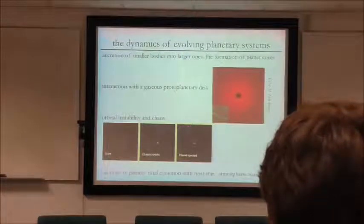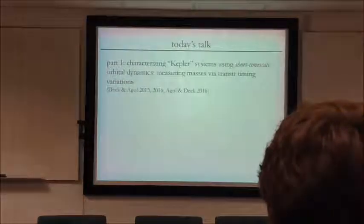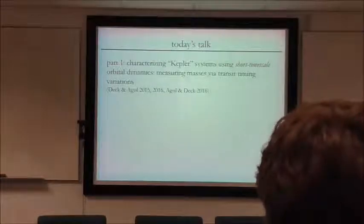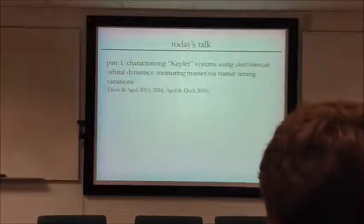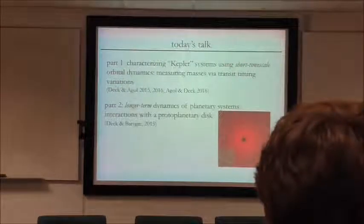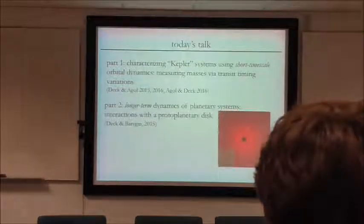Finally, if you're going to talk about close-in planets, you also need to worry about tidal evolution with the host star and atmospheric mass loss. Today, I'm actually going to start not by discussing these dynamical processes, but instead by talking about work I've done using orbital dynamics to characterize these Kepler systems. To test any theories about how these systems form and evolve, we first need a well-characterized sample. Then in the second part of my talk, I'll return to how planetary orbits might evolve in time — specifically, how planets interact with disks and what observational consequences arise, to assess how important this is for the Kepler systems.